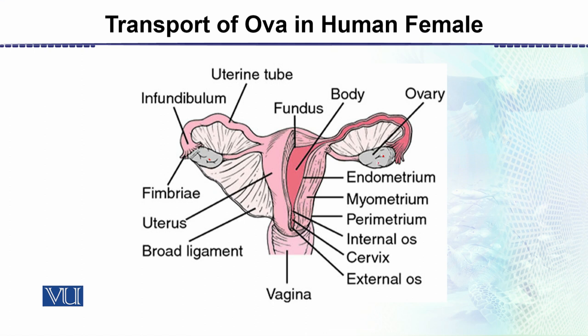When the egg is released from the ovary — which is called the ovulation process — the egg then moves along this path. The fimbria are the first structures that attract this egg into the tube. From there to this point, this part is about 10 cm long; this is the shortest path from the ovary to that point.